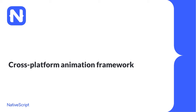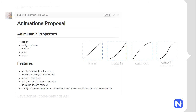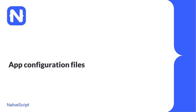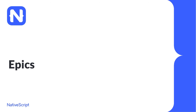We'll also include a cross-platform animation framework. With 1.3 you'll be able to animate properties such as opacity, background, scale, and rotate, set duration or delay, and set easing curves. Finally, we're adding app configuration files — you'll be able to configure properties about your application in files that propagate changes to the appropriate platform-specific config files, essentially what AppBuilder does with its AAB project file.